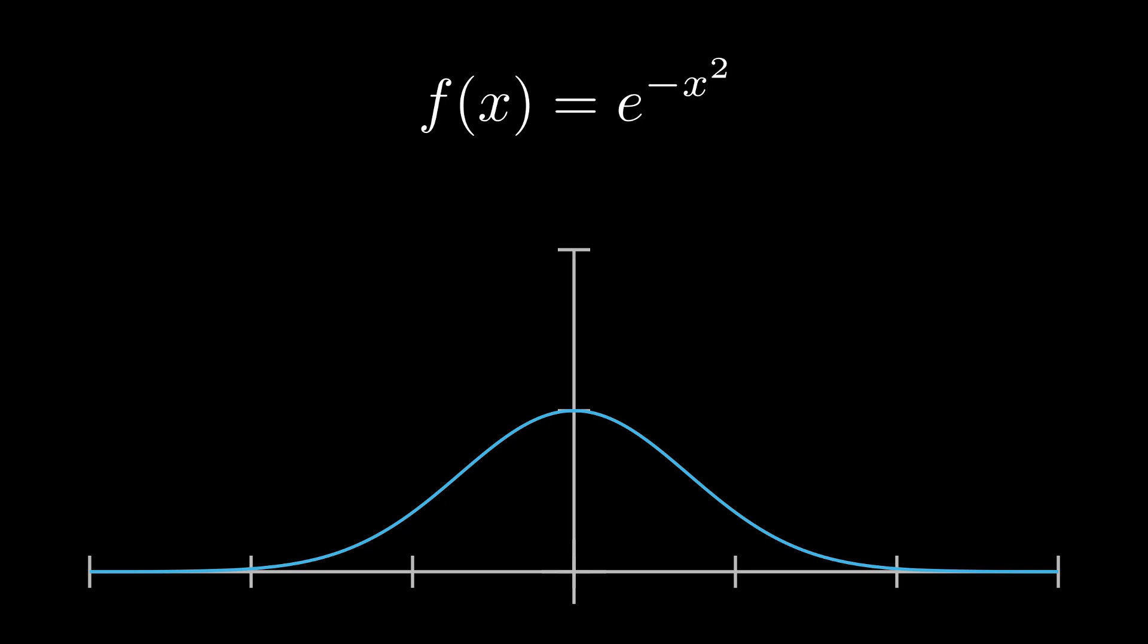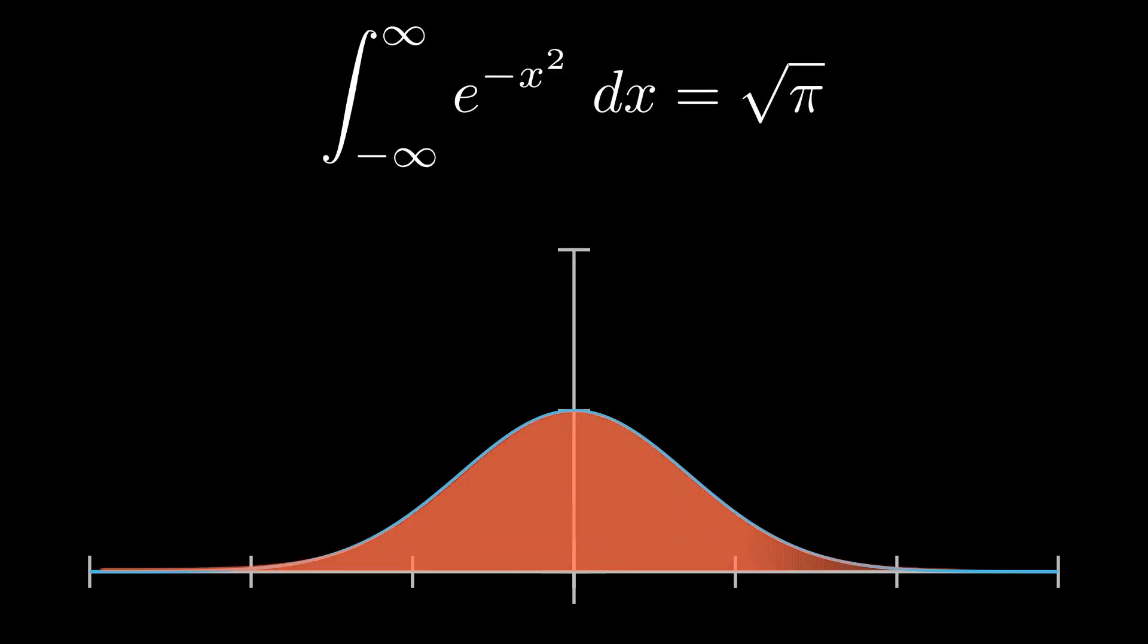What's really interesting is that if we consider the area under this curve, an integral from negative infinity to infinity, the result is the square root of pi. This completely blew my mind when I first saw it. Where's the circle? Somehow, a really common thing that appears everywhere is connected to pi.